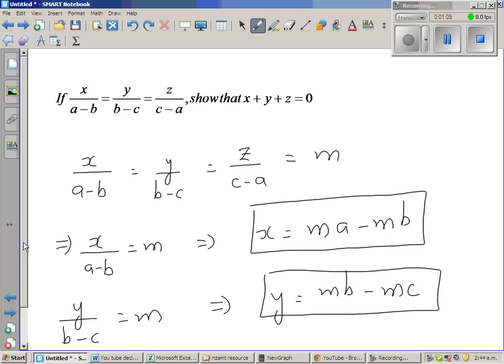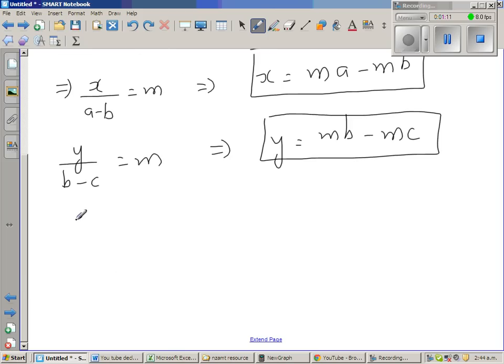And same way you can say z over c minus a is also equal to m, which implies cross multiplying, you can say z is equal to m c minus m a.